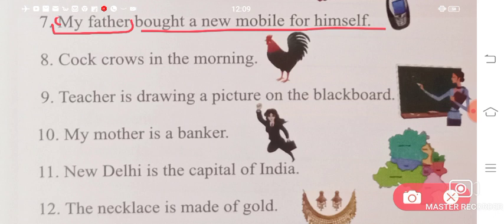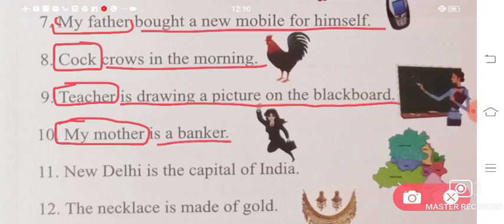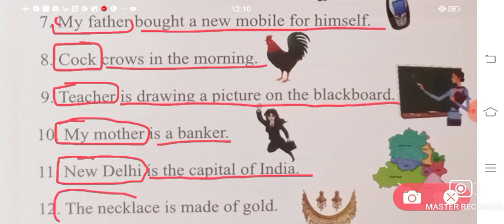'Cock crows in the morning.' We're talking about cock, so yes it is your subject, and 'crows in the morning' is your predicate. 'Teacher is drawing a picture on the blackboard.' Teacher is your subject, 'is drawing a picture on the blackboard' is your predicate. 'My mother is a banker.' We are talking about my mother - that's your subject. 'Is a banker' is your predicate. 'New Delhi is the capital of India.' We're talking about New Delhi, so this is your subject. 'Is the capital of India' will be your predicate. 'The necklace is made of gold.' We're talking about the necklace, so the necklace will be your subject. 'Is made of gold' is your predicate.